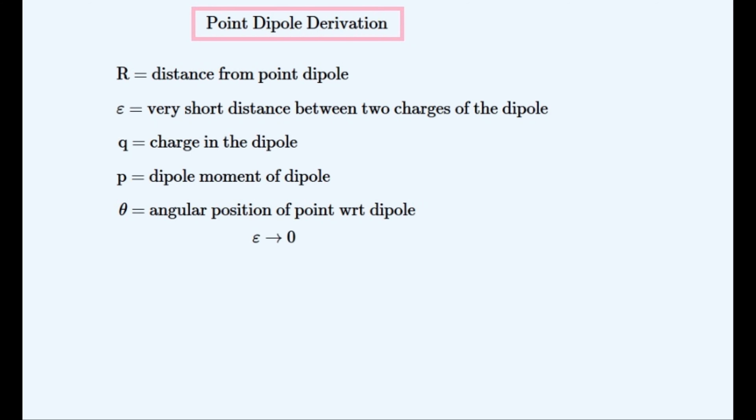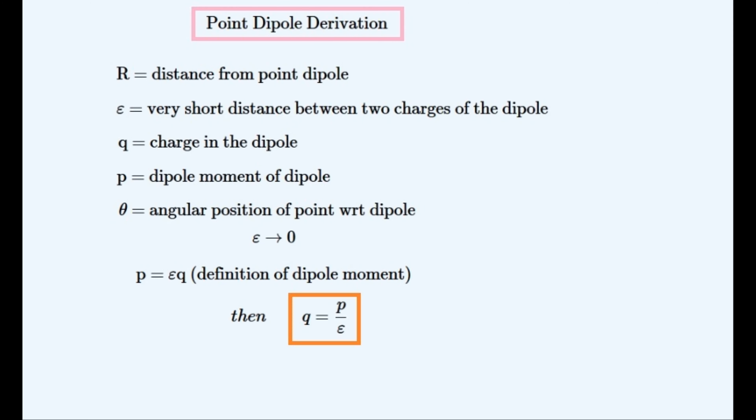We'll let the distance between the charges tend to zero and become infinitesimally small. The dipole moment is equal to the product of this distance and the charge on the positive particle in the dipole. This dipole moment is held constant. This is what the charge is equal to, and will tend to infinity as the distance tends to zero.